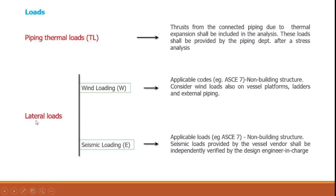The most important loads governing foundation sizing are the lateral loads. Wind loading (W) must be calculated per applicable codes such as ASCE 7, Eurocodes, or Indian codes. It is important to consider the equipment as a non-building structure, and the computed wind loads should include vessel platforms, ladders, and external piping.